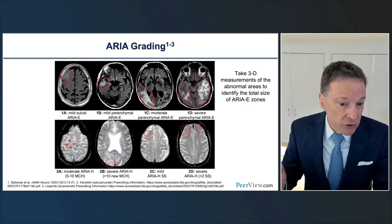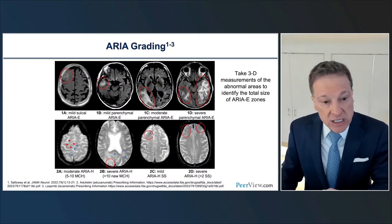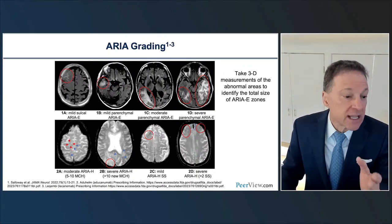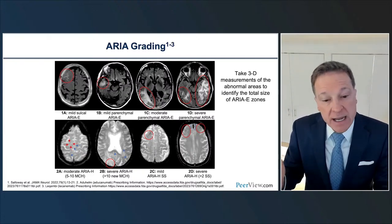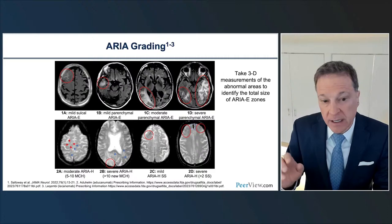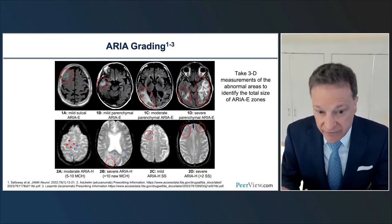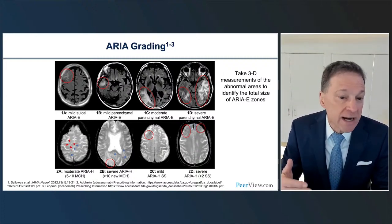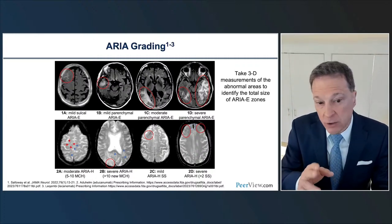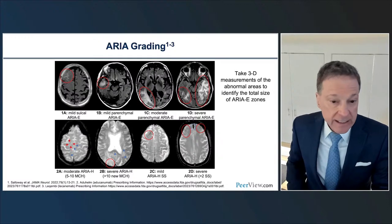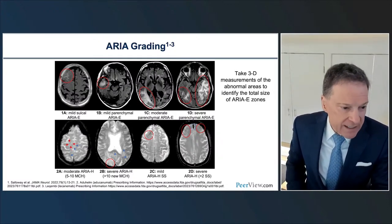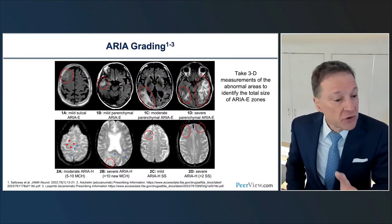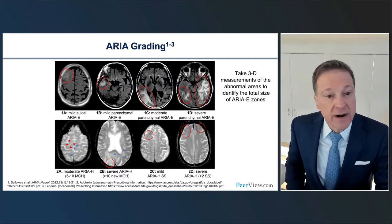Turning to examples of superficial siderosis: in one example, a sulcal focus of siderosis in the right frontal region represents a single area — characterized as mild. In another example, the patient had several different areas of superficial siderosis: bifrontal areas and another separate region in the parietal area, giving three zones — characterized as severe. We also outline a calcification of the falx in that case, which could be a mimic. The more we do this as radiologists, the more straightforward it becomes to differentiate vessels from lobar microhemorrhages or superficial siderosis.